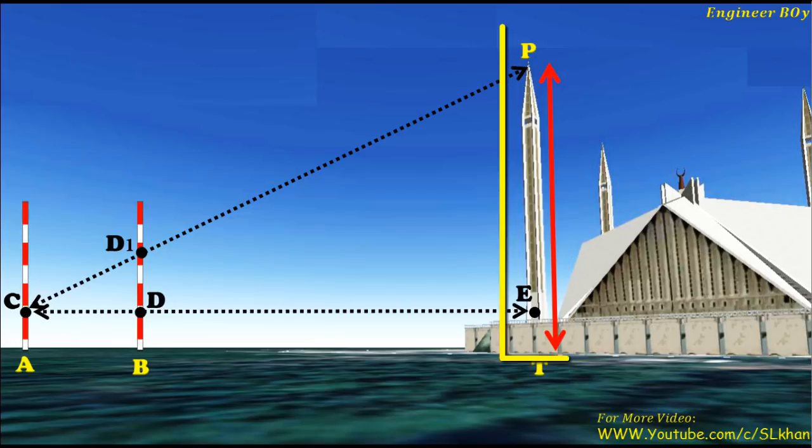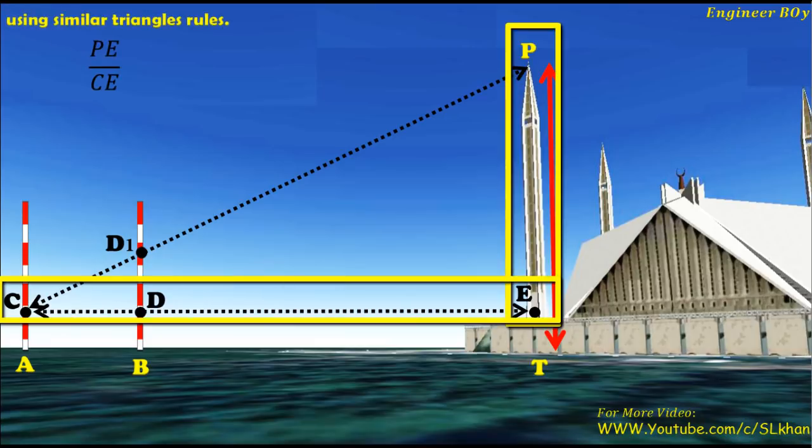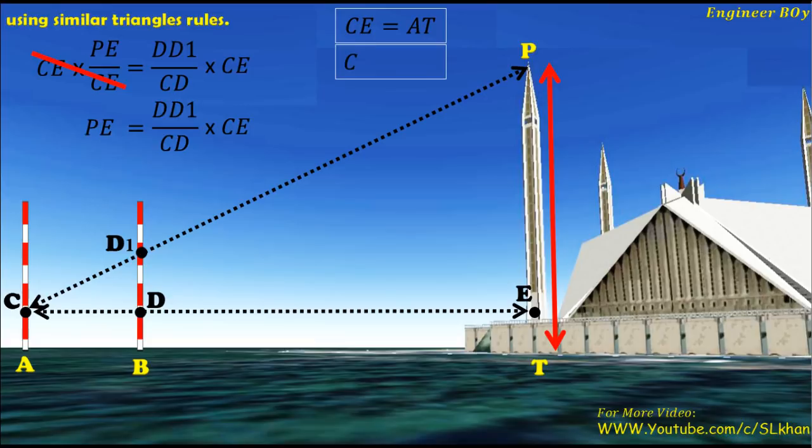According to similar triangles, the ratio of PE and CE should be equal to the ratio of DD1 and CD. Now by multiplying CE to both sides we can get PE equals DD1 times CE divided by CD, or PE equals DD1 times AT divided by AB, because CD equals AB and CE equals AT.